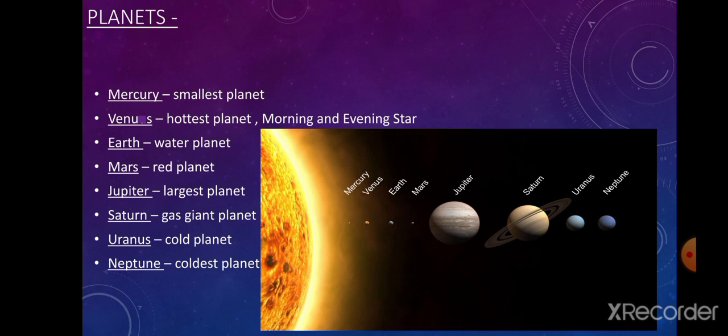Earth is known as the water planet because about 71 percent of it is water. It is the largest of the four inner planets and is also called the blue planet because from space, the oceans combined with the atmosphere make the planet look blue. It is covered by a layer of air called the atmosphere, which is a mixture of gases such as nitrogen, oxygen, and carbon dioxide. The atmosphere keeps the Earth warm by trapping heat.